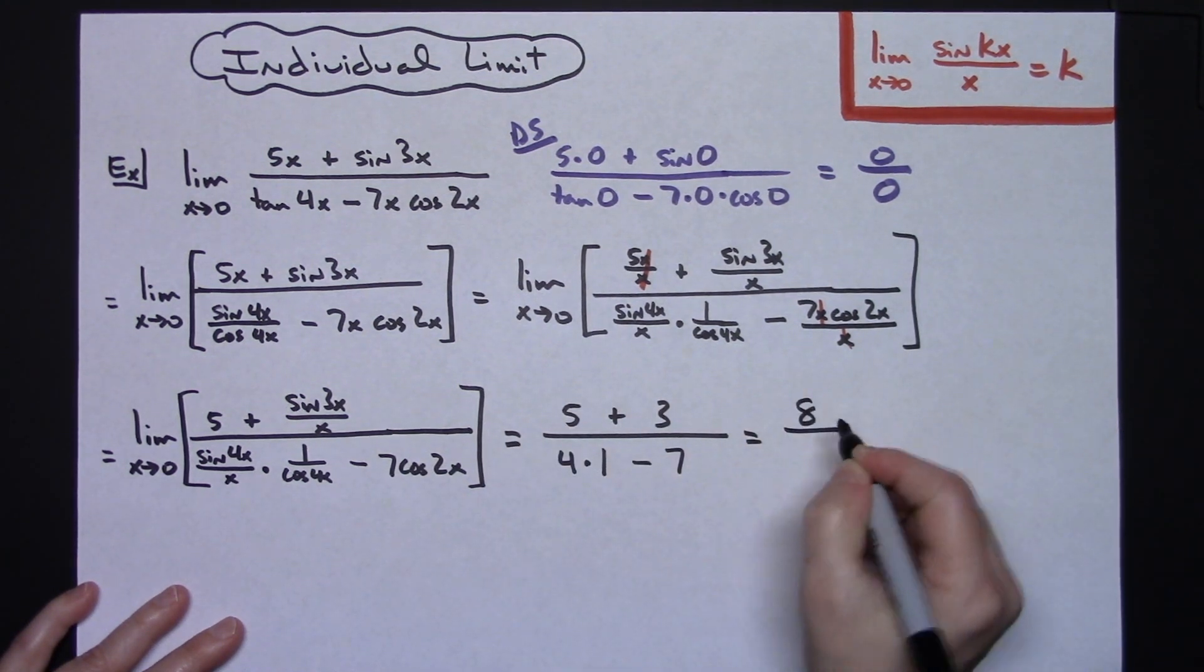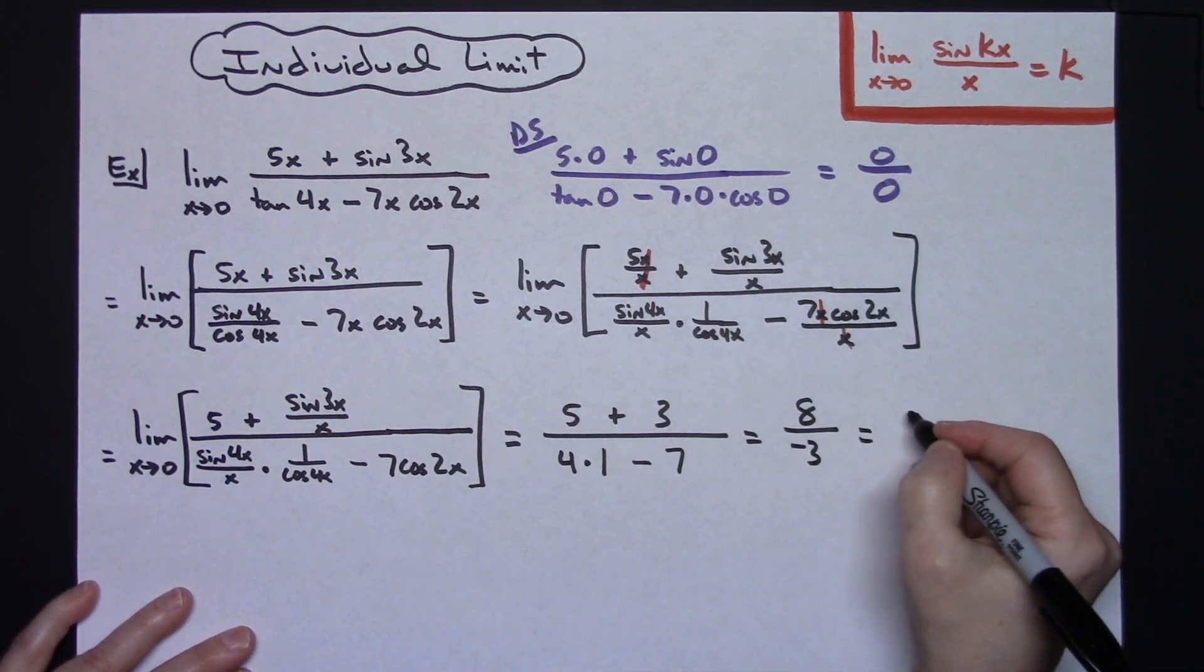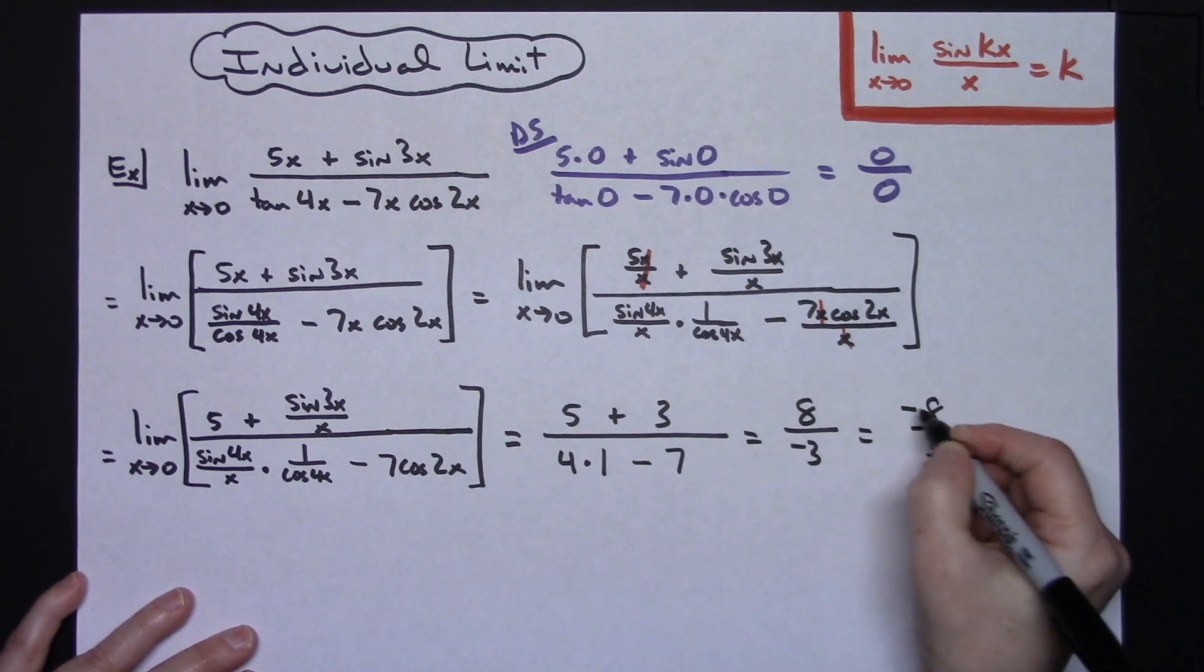Adding across the top is going to give me an 8. And then on the bottom I'm going to have a negative 3 which gives me an overall limit of negative 8 thirds.